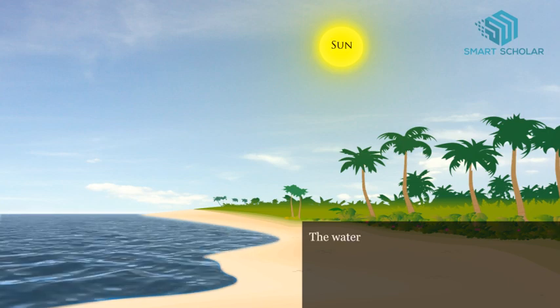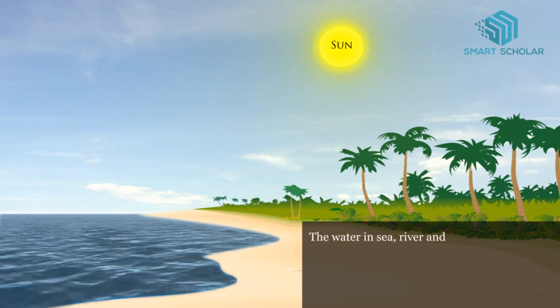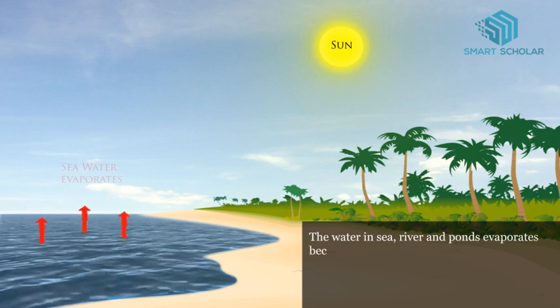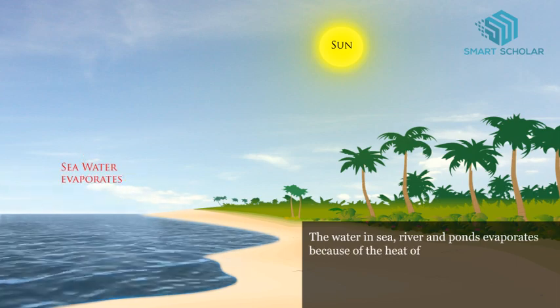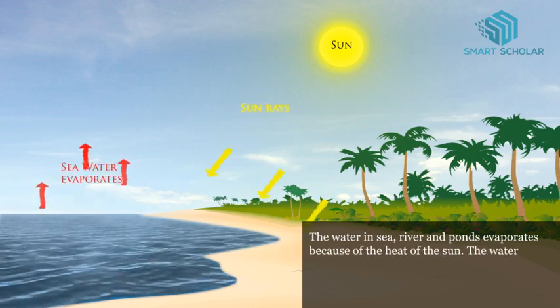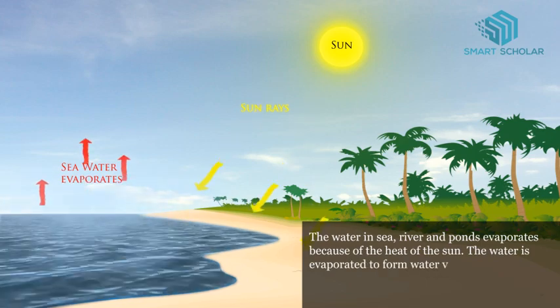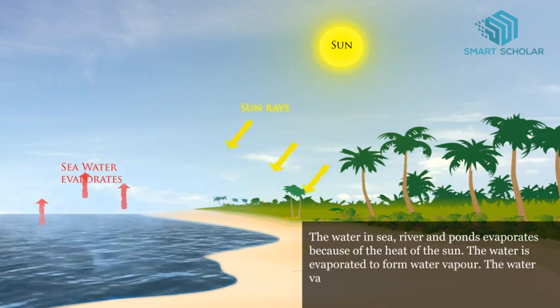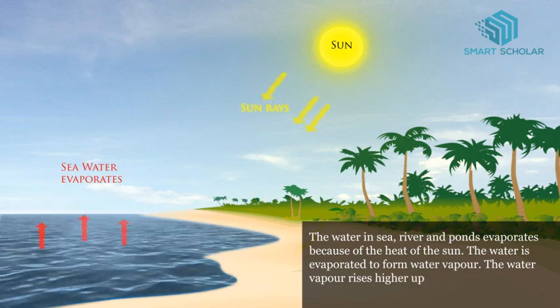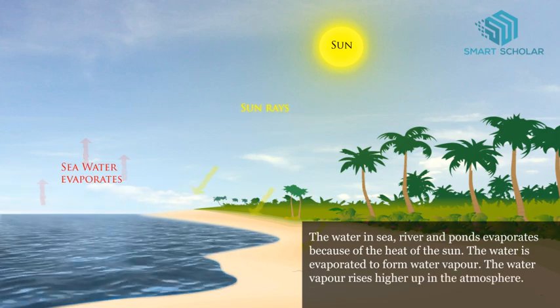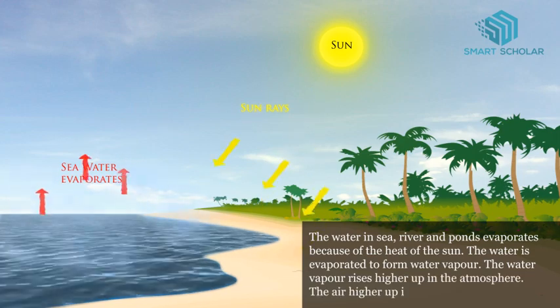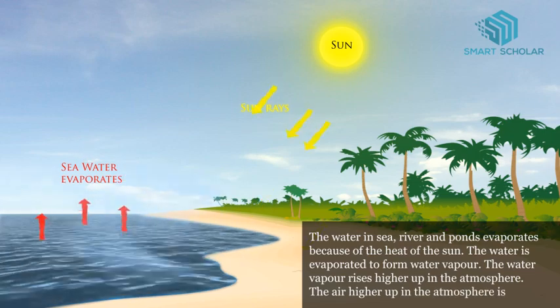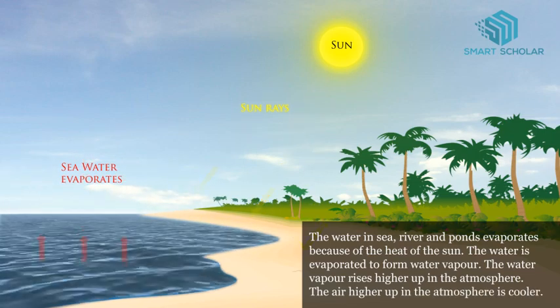The water in sea, river and ponds evaporates because of the heat of the sun. The water is evaporated to form water vapour. The water vapour rises higher up in the atmosphere. The air higher up in the atmosphere is cooler.